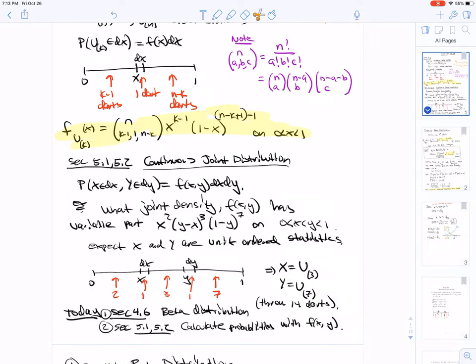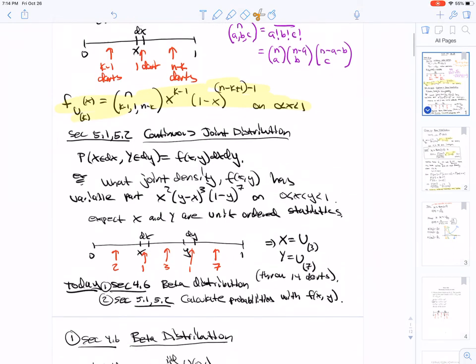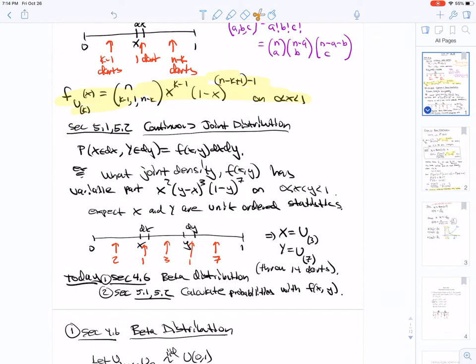For example, you can ask what joint density f(x,y) has variable part x² (y-x)³ (1-y)⁷ on 0 to 1 with x less than y. When we see the parts x² (y-x) (1-y), you're thinking to yourself, okay, x is going to be some order statistic and y is also going to be a standard order statistic. In this case x is the third order statistic and y is the seventh order statistic.